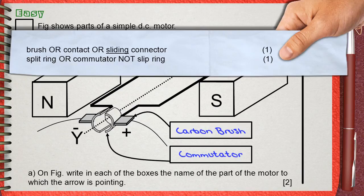Each box is for one mark. For the upper box you can say brush or contact or sliding connectors. They all give the same meaning, but carbon brush is the more accurate answer. This gives you one mark.